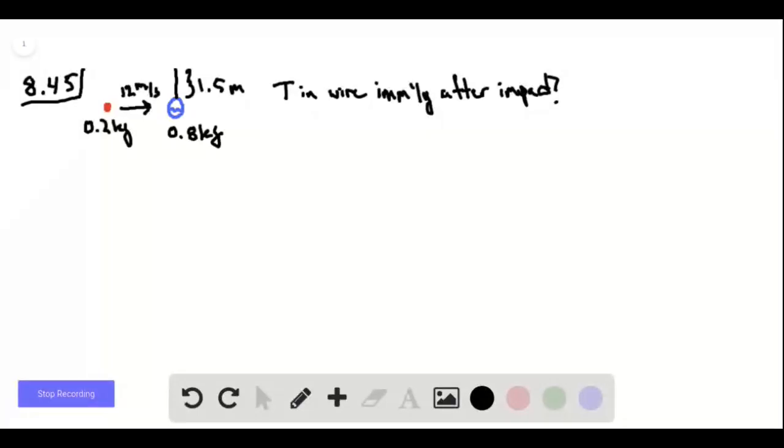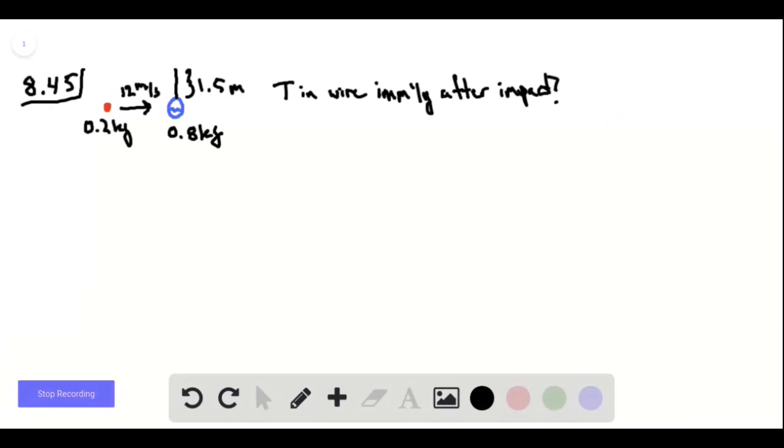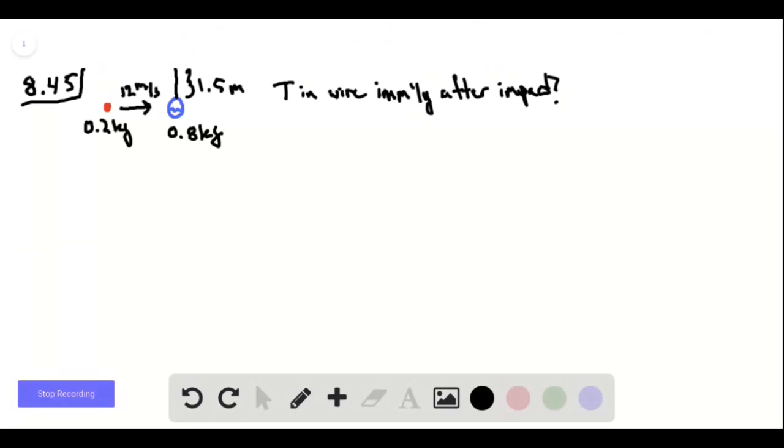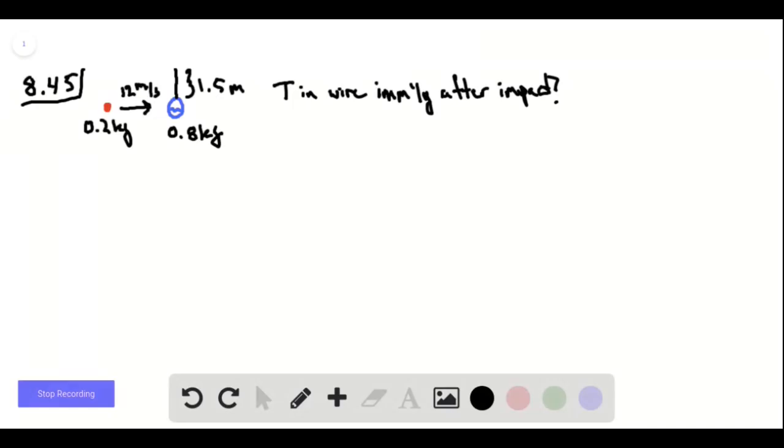Problem 8.45: we've got an ornament hanging off of a wire and a missile of some sort approaches it with the given speed and embeds in it. What we want to find is what is the tension in this wire immediately after this impact occurs.